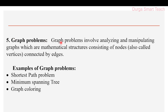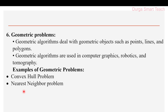The fifth problem type is graph problems. Graph problems involve analyzing and manipulating graphs, which are mathematical structures containing nodes — that is, a collection of vertices and edges. Some examples of graph problems are: the shortest path problem, minimum spanning tree, and graph coloring. I will discuss these in later classes.